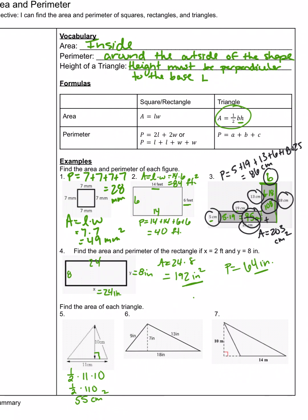For number 6, we need to identify which sides are perpendicular to determine the base and height. The base is 18, and we need to find which of the other values — 9, 7, or 13 — is perpendicular to it. It's the 7, which forms the 90-degree angle, so the height is 7. Area equals one half times 18 times 7: 18 times 7 equals 126, divided by 2 gives us 63 inches squared.